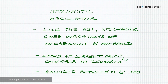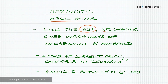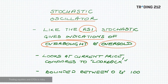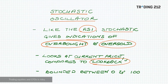Some further points about the stochastic oscillator: like the RSI, it gives indications of when the market is overbought and oversold. It does this by looking at the current price and comparing it to a look back period. The difference is that the stochastic oscillator doesn't just compare price to previous price levels — it factors in the highest high and the lowest low across the look back period. The value of the oscillator is bounded between 0 and 100.